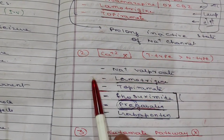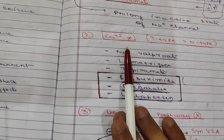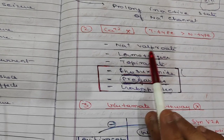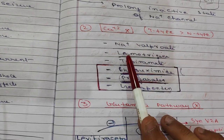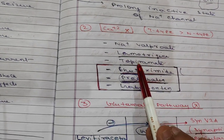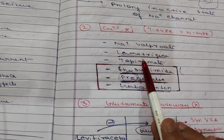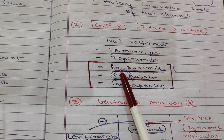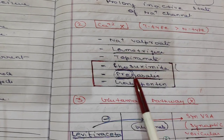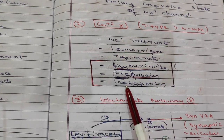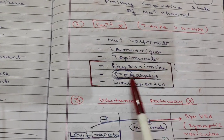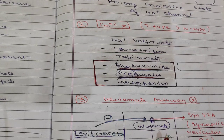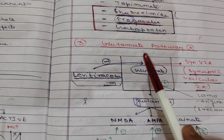The next group is calcium channel inhibitors. It includes sodium valproate, topiramate, lamotrigine, and three additional drugs: ethosuximide, pregabalin, and gabapentin.